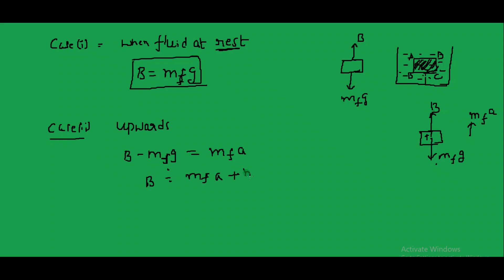So the equation becomes: Buoyant Force B equals Mf times (A plus G), that is, mass of fluid multiplied by the sum of acceleration and gravitational value. This is the result for Case 2, when the body is moving upwards.